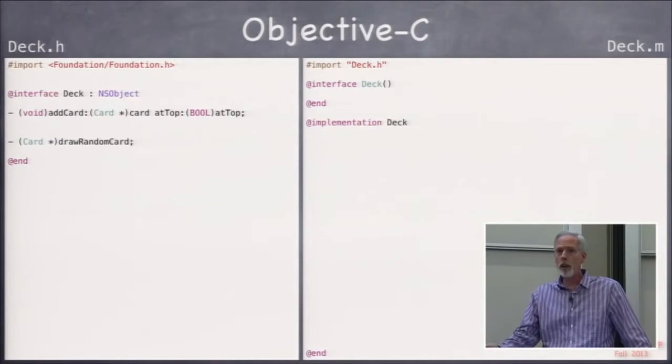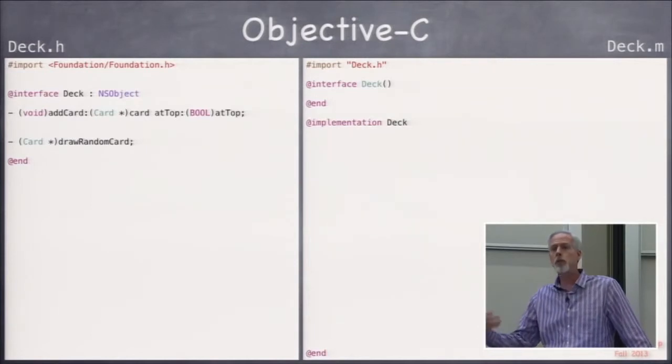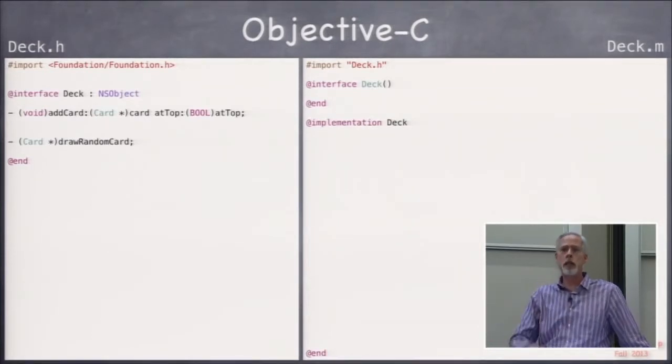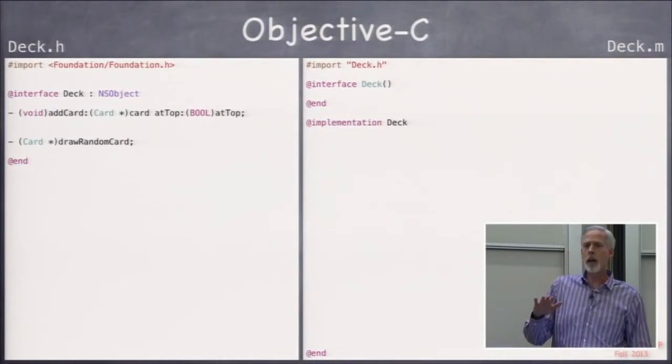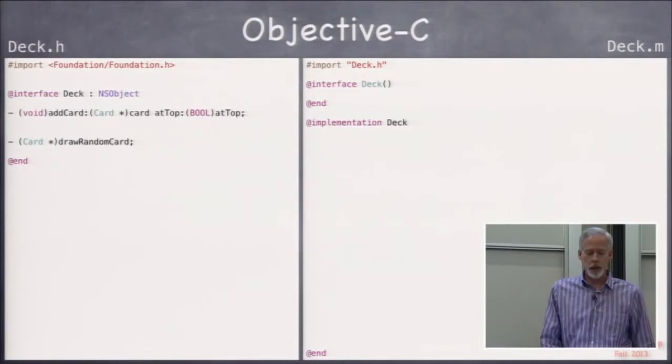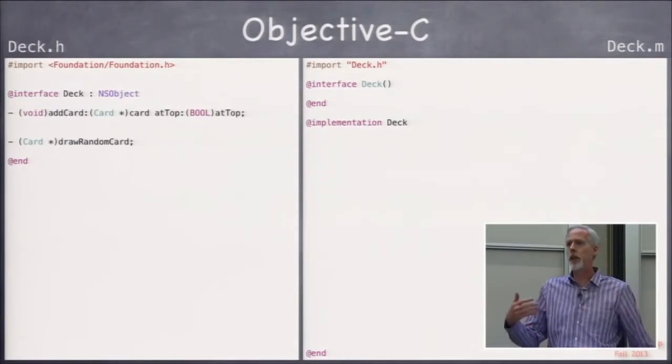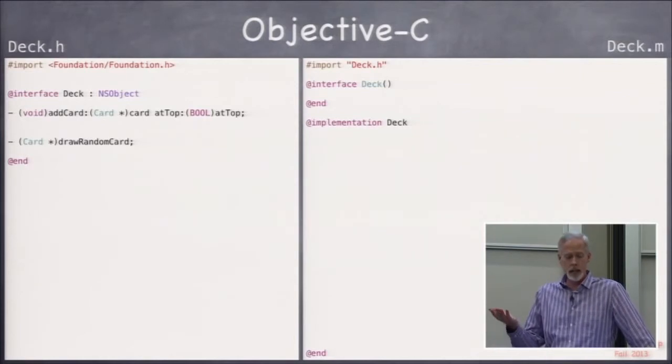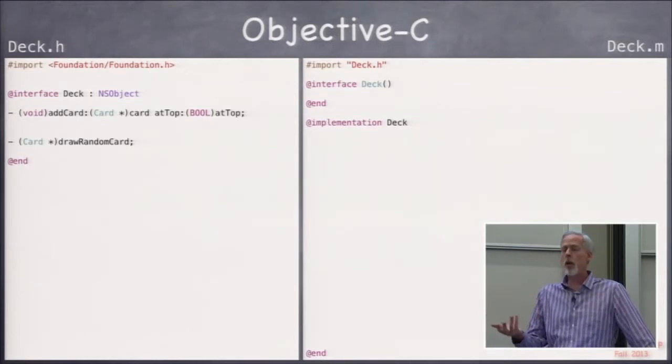The atTop part is actually part of the name of this method. The arguments, like the card that you're going to add, and atTop, which is a Boolean whether to add it at the top of the deck or at the bottom of the deck, those arguments are interspersed. We'll see how you call such a method in a moment.